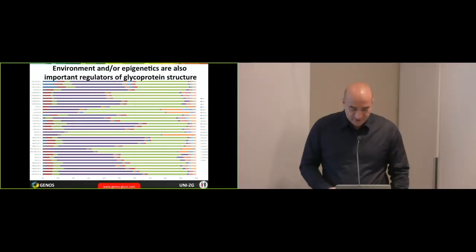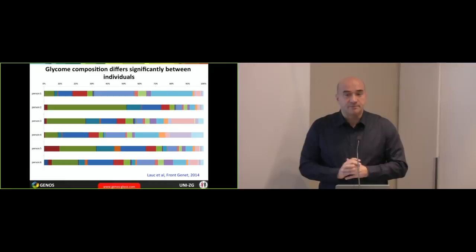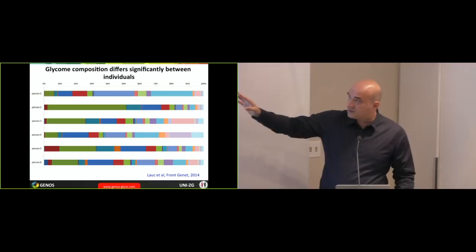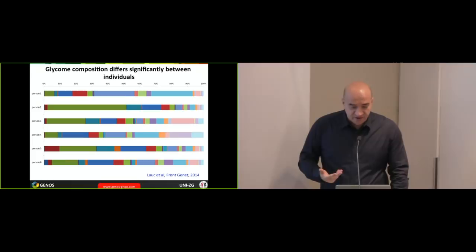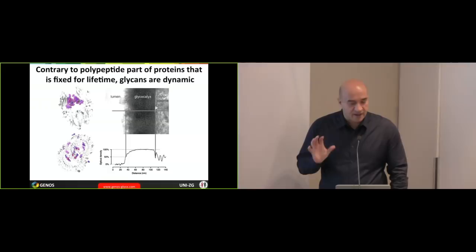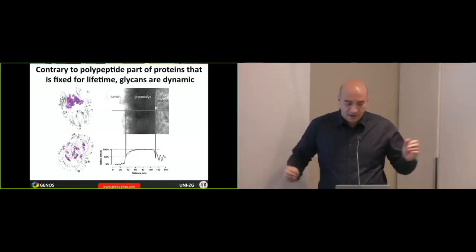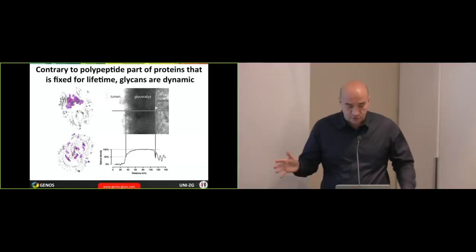So cell lines can produce different glycomes despite having more or less the same genome. And also people produce very different glycomes. This is IgG glycome of six random individuals, each color just showing the different structure. So obviously, we are different in the way we glycosylate our proteins. And contrary to the polypeptide part, which is fixed for a lifetime. So when you have your gene, your protein will be the same for the rest of your life. Of course, unless you have a tumor and then the tumor makes a different protein. But the rest of your body will be making the same protein.